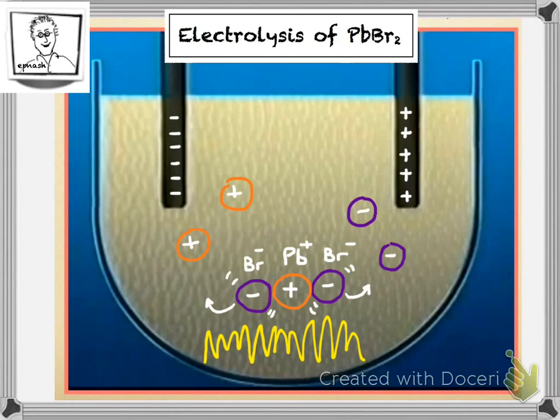Positive ions, the lead, will attract to the negative electrode. And the negative ions, the bromine in this case, will attract to the positive.